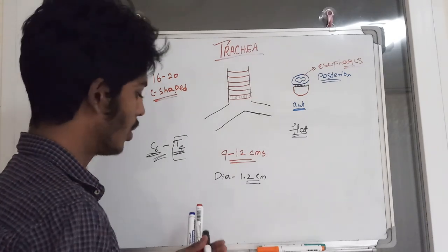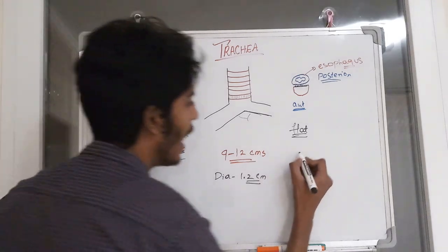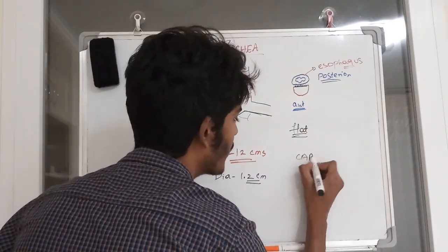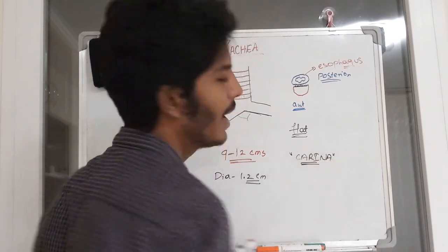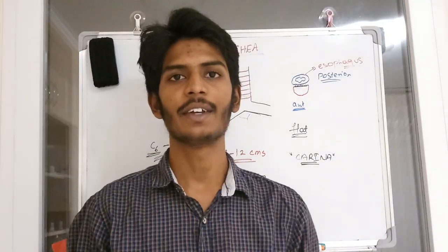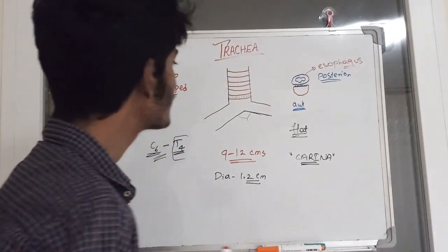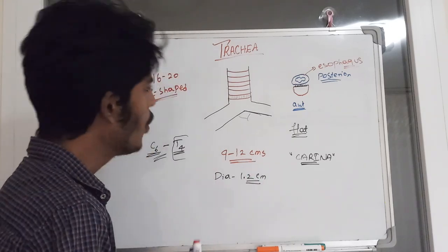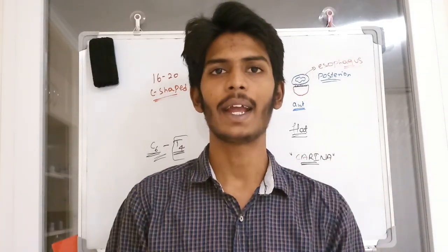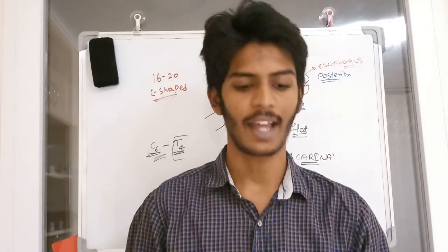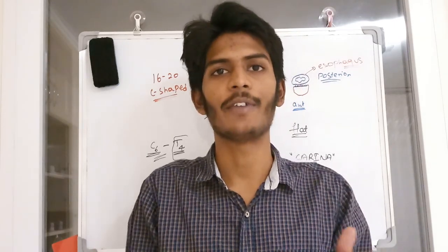At one level, the trachea divides into the bronchi. The point of division is called the angle of carina — the angle at which the trachea bifurcates into the two primary bronchi. The trachea is supplied mainly by the inferior branches of the inferior thyroid artery.